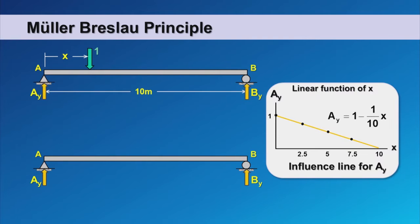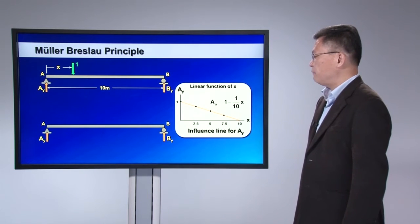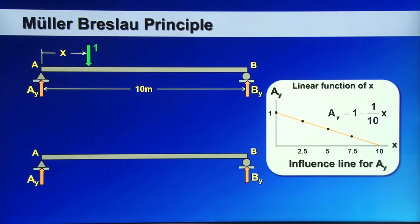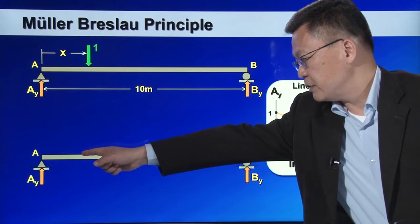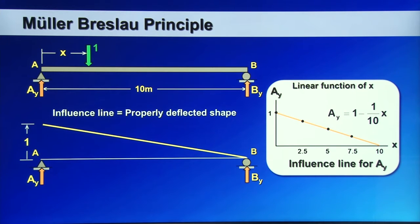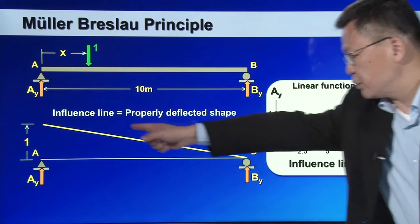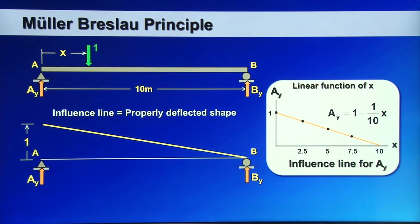This example illustrates the Müller-Breslau principle. Previously we obtained the influence line for reaction force at A, Ay. If we relax the reaction at A and then displace point A upward with a unit displacement, we get this deflected shape. As you can see, this deflected shape is exactly identical to the influence line we found before.